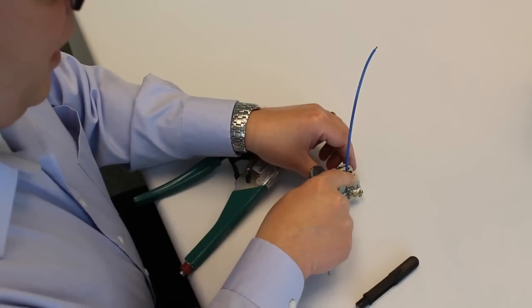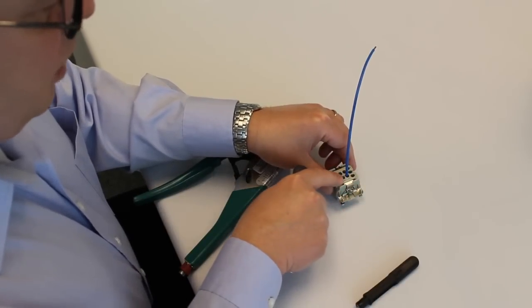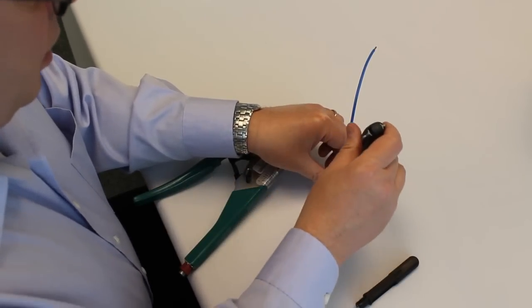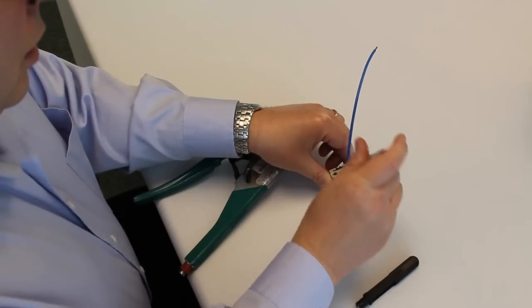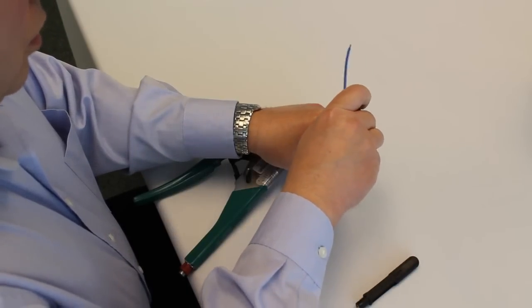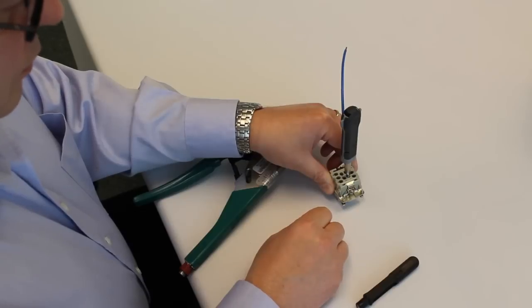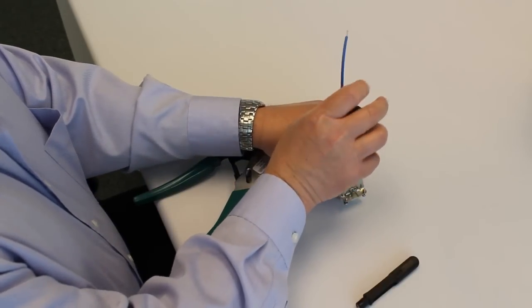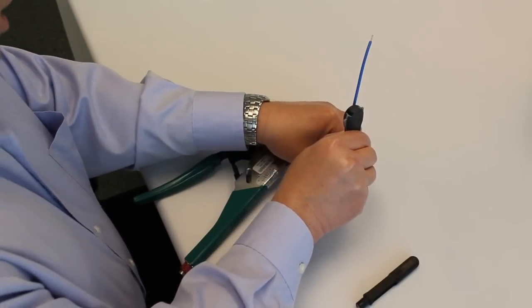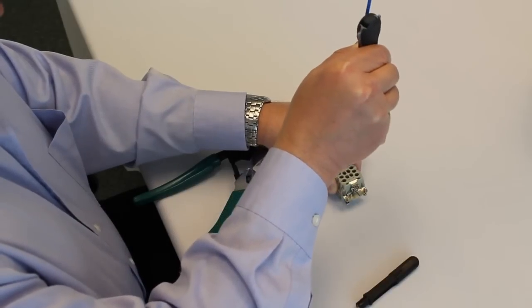You'll notice by every contact cavity, there's a slot at the side. You insert the removal tool until it comes to a stop. You clamp the wire against the side of the tool, and remove it to the rear.